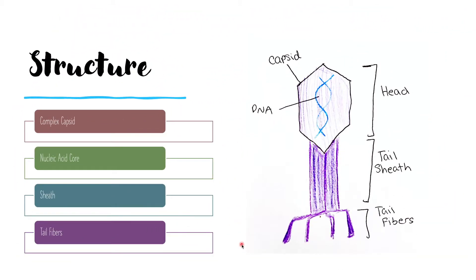Bacteriophages are composed of a complex capsid coat, a nucleic acid core which can be either DNA or RNA, a sheath and tail fibers.